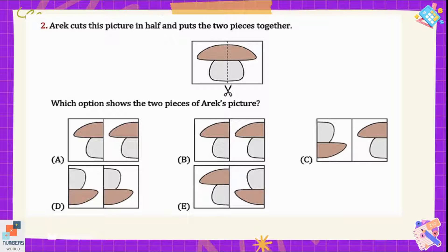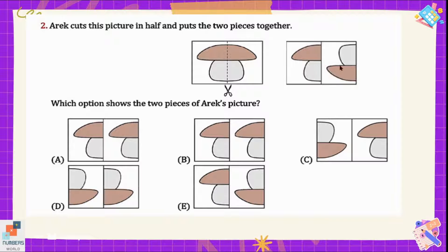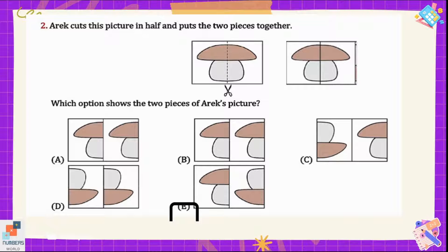So options A, B, and D are not correct. In option C, if we rotate one half of the picture, we still cannot make a complete mushroom. In option E, if we rotate this part of the picture, then Eric's picture can be made. So option E is the correct option here.